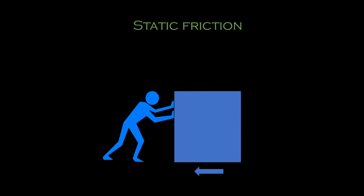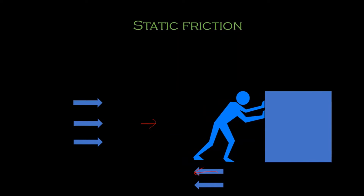First, static friction. When there is a box and a person is trying to push it in one direction, there is a force of friction acting in the opposite direction. There is a certain amount of force involved. If the person tries to push it and is unable to move it, they have to apply more force — still more force — until the box starts moving. Before it starts moving, that amount of force is called static friction.